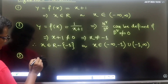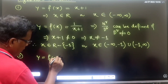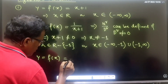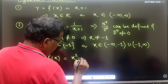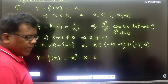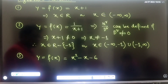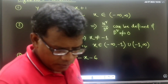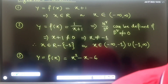Now suppose a third function: y = f(x) = x² − x − 6. This is a quadratic — a second-degree expression in x. Tell me what the domain of this function will be.